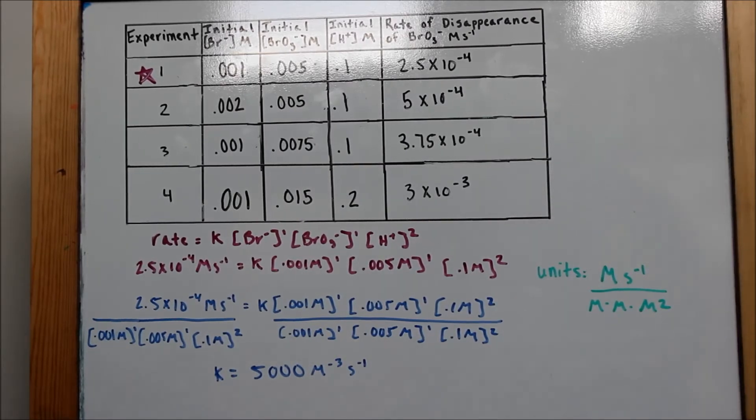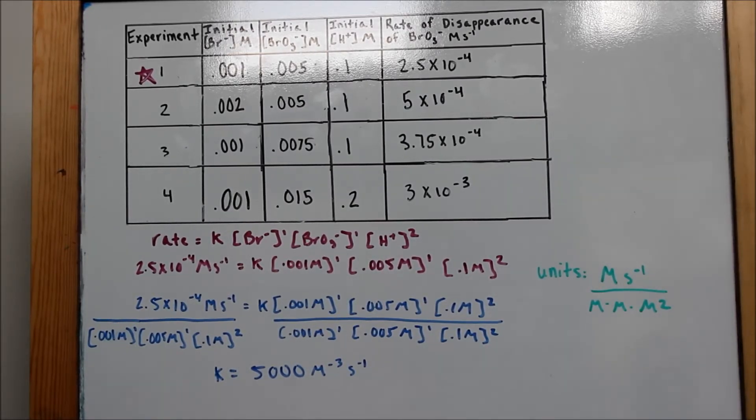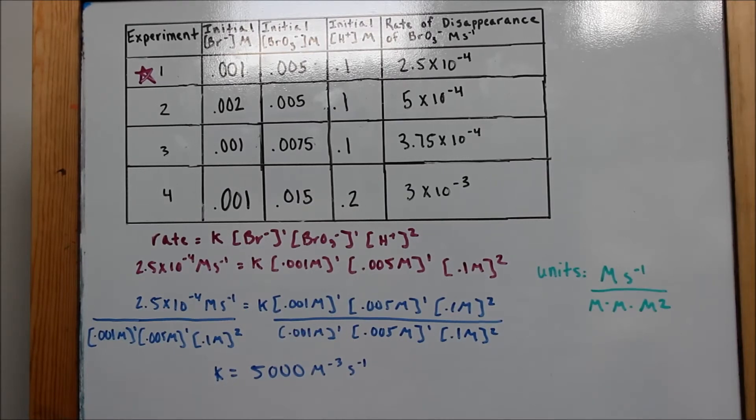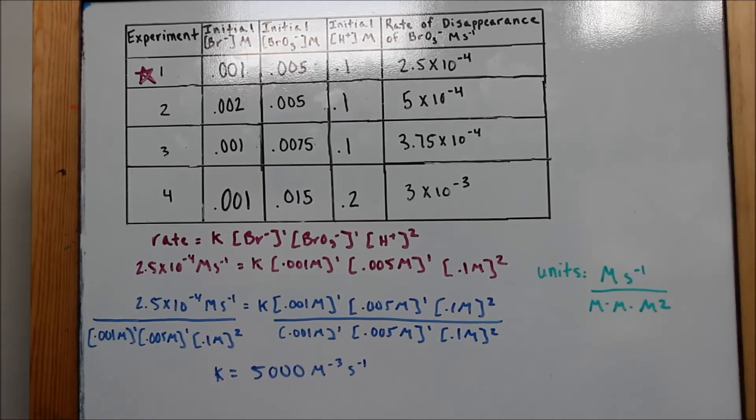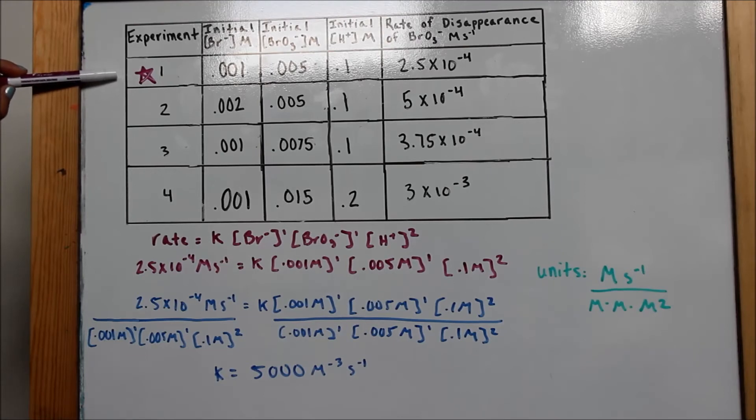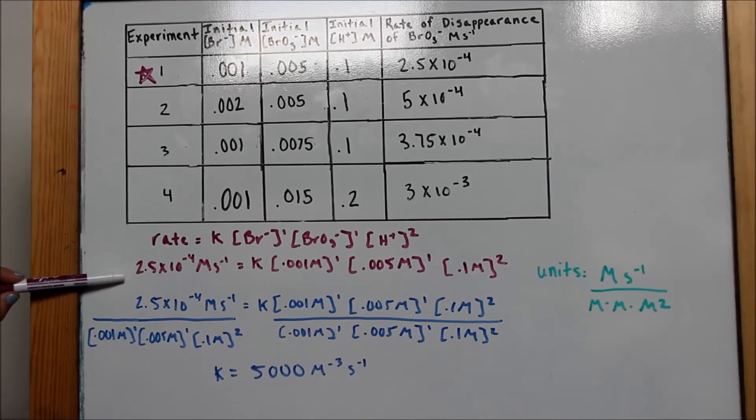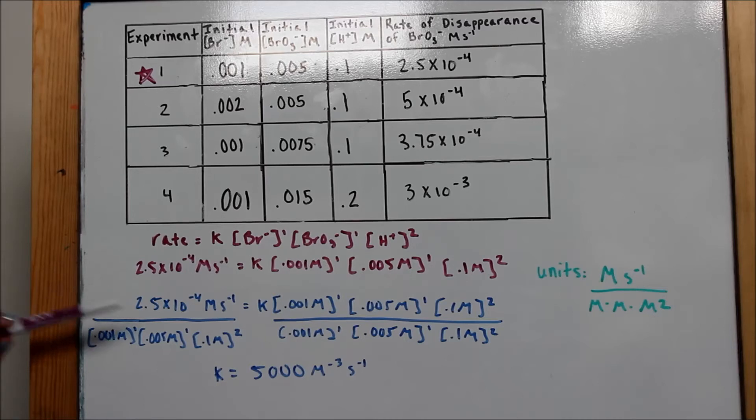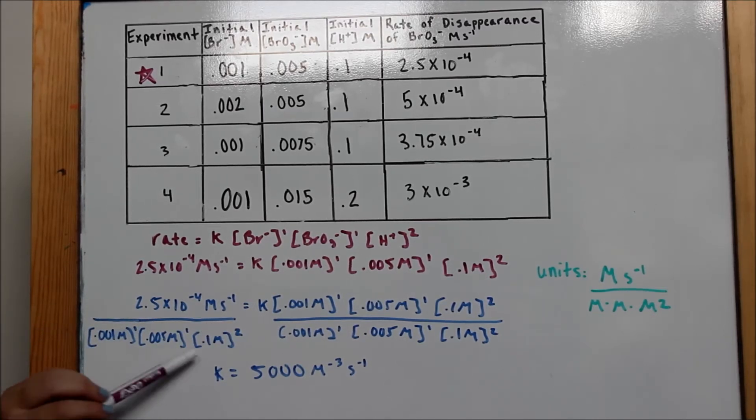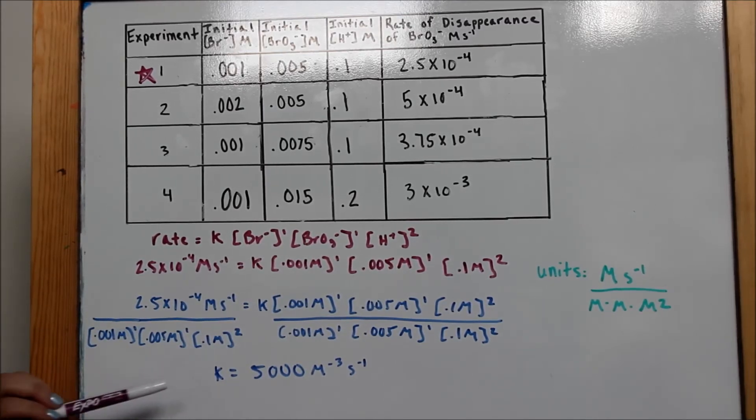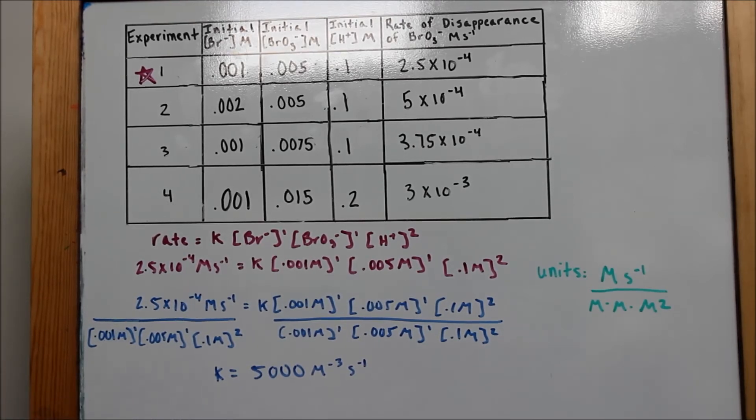Part C, determine the value of the specific rate constant for the reaction at 298 Kelvin. Include the correct units. Part C is asking us to find K in the rate law equation. We will pick an experiment and substitute in data given in the chart to solve for K. I chose experiment number 1 and substituted in the data here. Next, we will solve for K. When solving for K, remember to square 0.1. I found K to be 5,000 molarity to the negative 3 seconds to the negative 1.